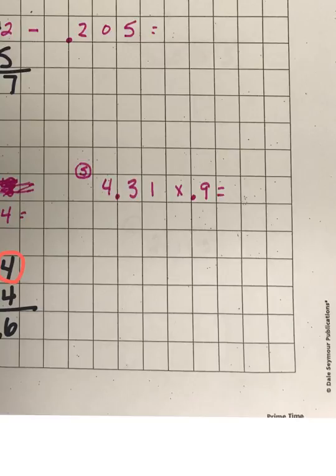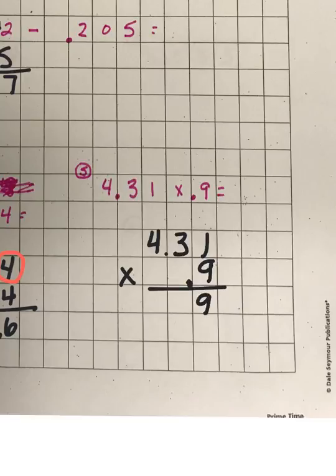Same setup for question five. You would take 4.31 and multiply it by 0.9 — just multiply like normal. Then count the number of digits to the right of the decimal up above, both of them. There are three of them, so you need to have three numbers to the right of the decimal in the answer.